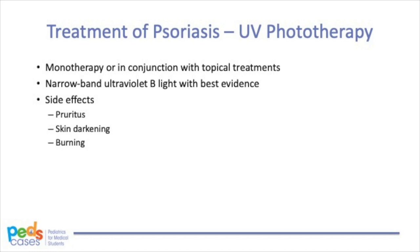Patients may also benefit from exposure to ultraviolet phototherapy, either as monotherapy or in conjunction with topical treatments. Among the spectrum of electromagnetic radiation, narrowband ultraviolet B light has shown the best evidence. Patients can receive phototherapy in an outpatient dermatology office or through a home light box. Phototherapy is usually initiated at a lower dose and titrated up while monitoring for symptoms and tolerance. It is essential to monitor for and manage side effects including pruritus, skin darkening, and burning.